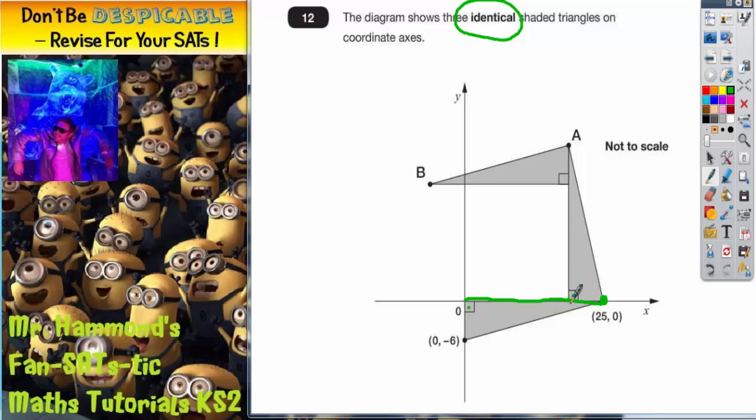So here's the right angle. The longer one touching the right angle here must also be 25. And the longer one touching this right angle must also be 25.